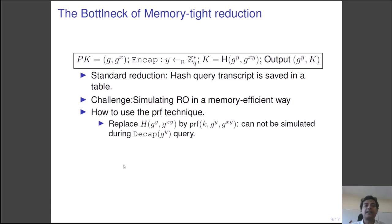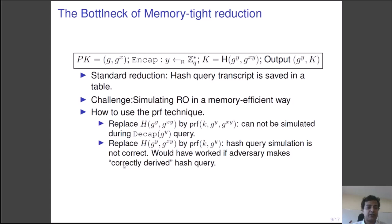The question is, can we apply the PRF trick? The first attempt would be to replace the hash function h by the PRF everywhere it is used. Namely, h of g to the power y and g to the power xy can be replaced by PRF of k evaluated on g to the power y and g to the power xy. However, this is not good. The reduction cannot simulate the decapsulation query as the reduction cannot find g to the power xy from g to the power y. How about dropping g to the power xy from the hash evaluation? This certainly helped in the decapsulation simulation. However, the adversary can indeed find collision from the hash query. Hence the hash oracle simulation is not right.